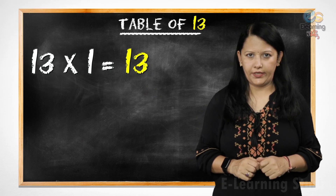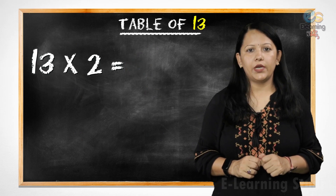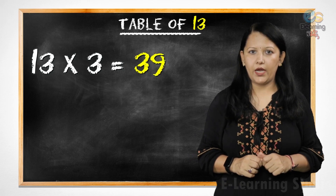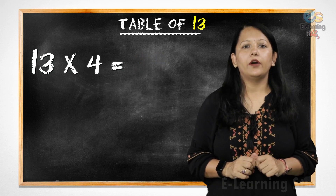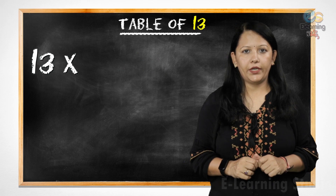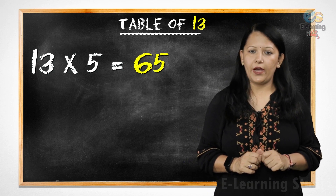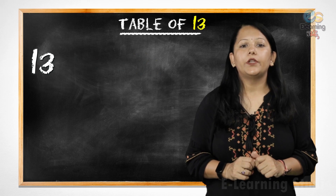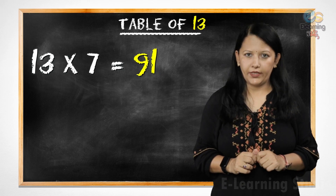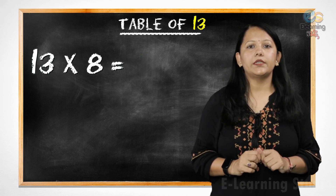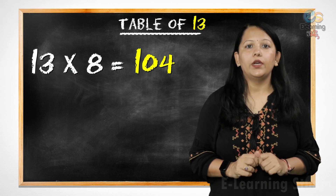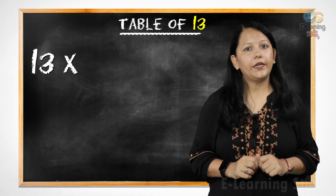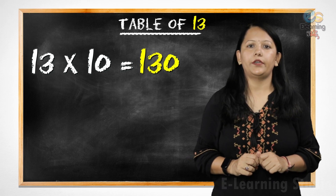13 ones are 13, 13 twos are 26, 13 threes are 39, 13 fours are 52, 13 fives are 65, 13 sixes are 78, 13 sevens are 91, 13 eights are 104, 13 nines are 117, 13 tens are 130.